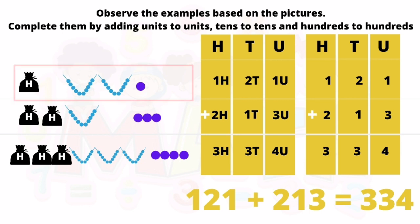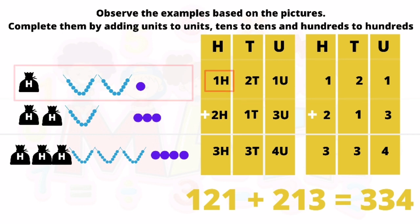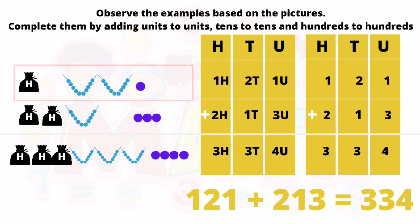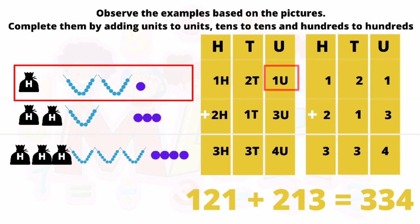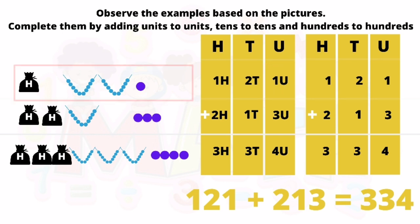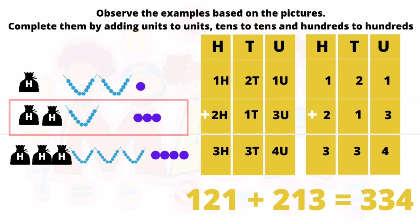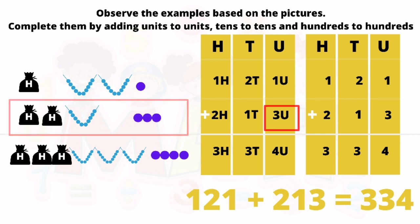How many purses can you see in the first column? Yes, it is one. So we will write one in the hundreds place. How many necklaces in the first column? Yes, it is two. So we will write two in the tens place. In the second column, how many purses? It is two — write two in the hundreds place. How many necklaces? One — write one in the tens place. How many loose bits? Three — write three in the units place.